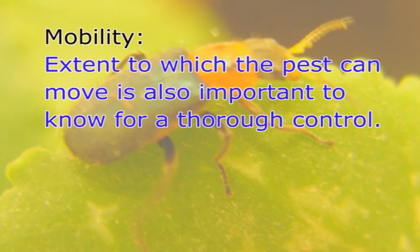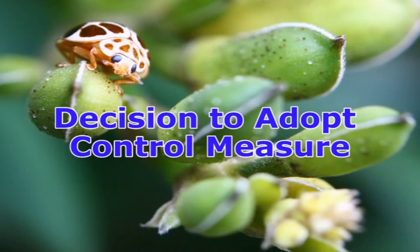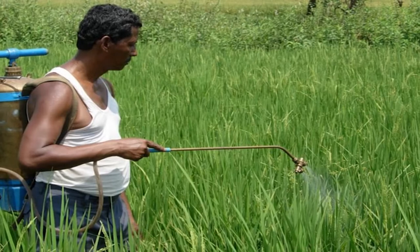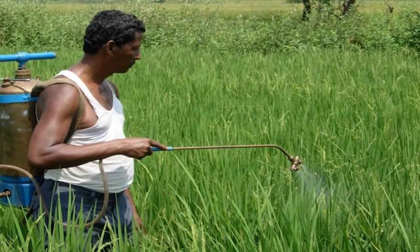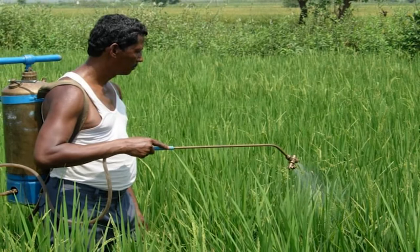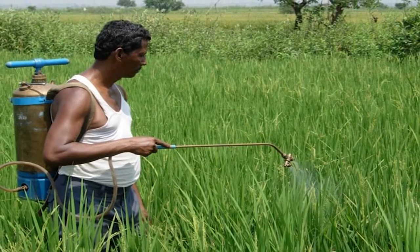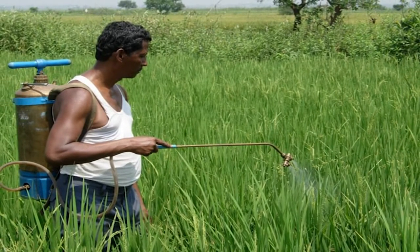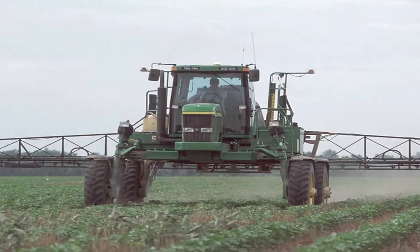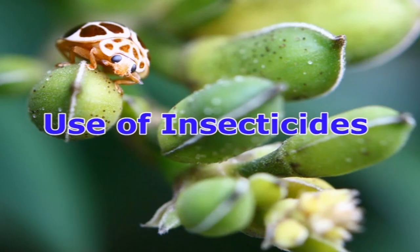Mobility — the extent to which the pest can move — is also important to know for thorough control. A control measure should not be started at the mere sight of pests; it should only be done when the pest has crossed the economic threshold. The choice of control measure is also important — an integrated approach is the best method of pest control. However, if this is not possible for lack of expertise and facilities, insecticides may be employed.